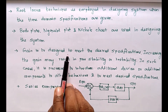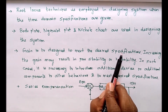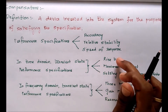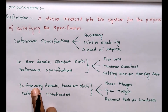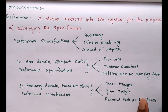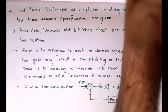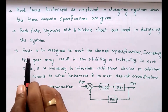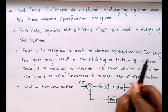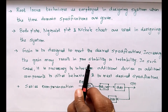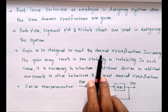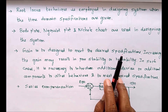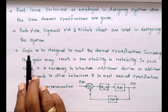Gain is to be designed to meet the design specifications. For time domain, there are three specifications, and similarly for frequency domain. To meet the given or desired specifications, we have to design the gain. However, increasing the gain may result in poor stability or instability.